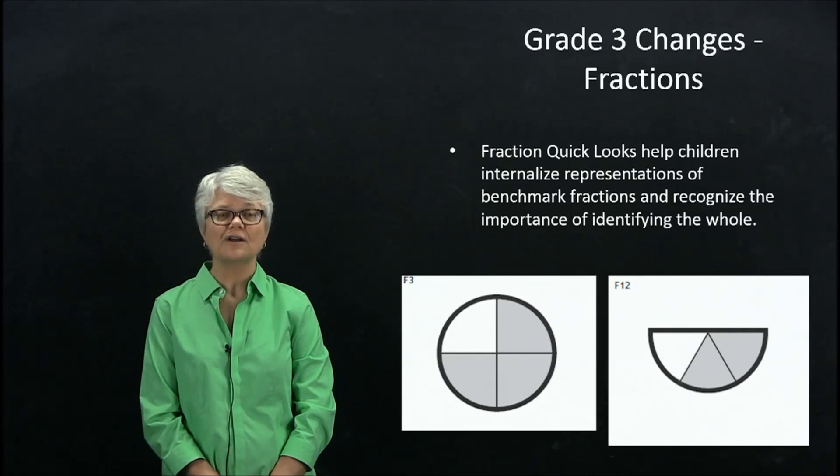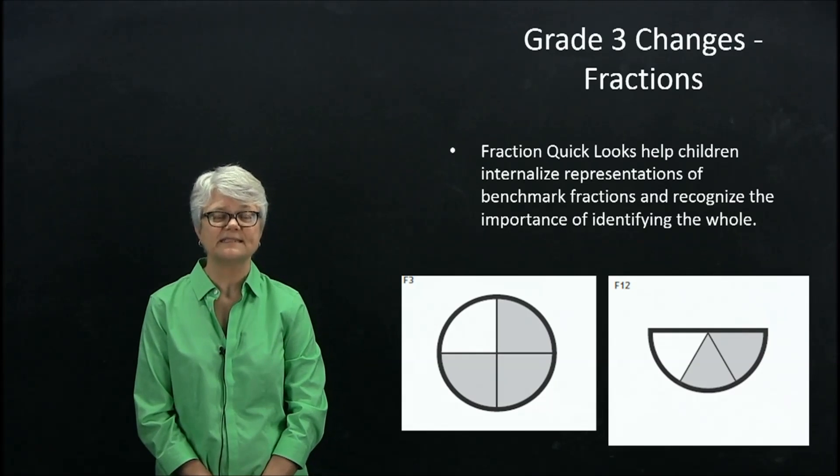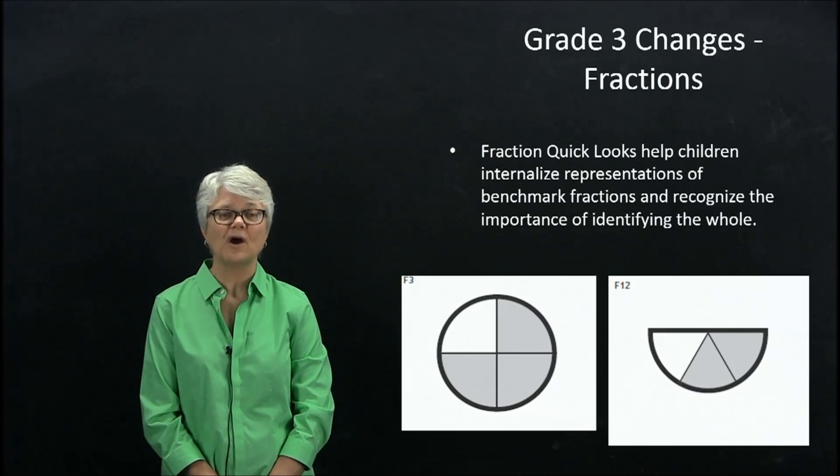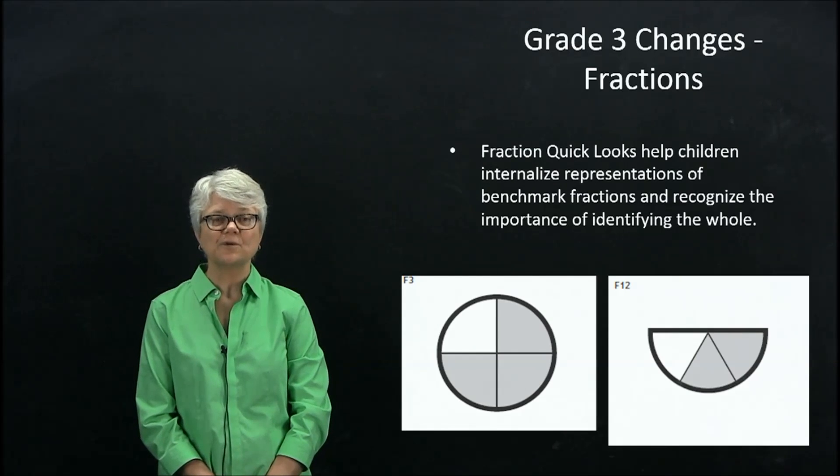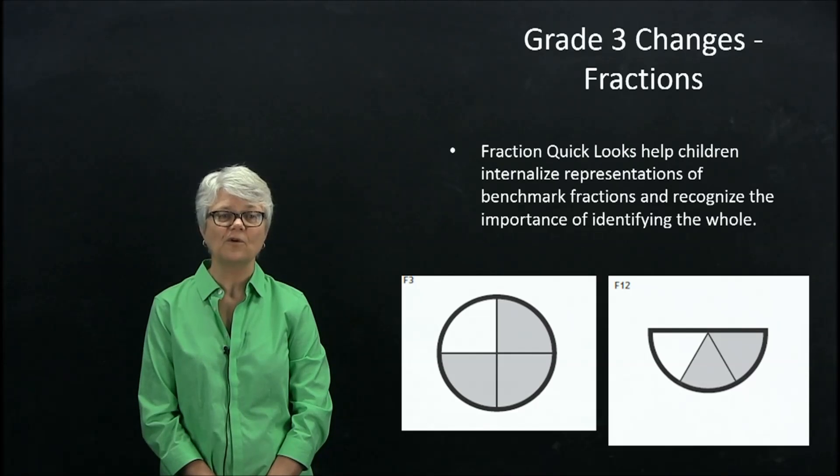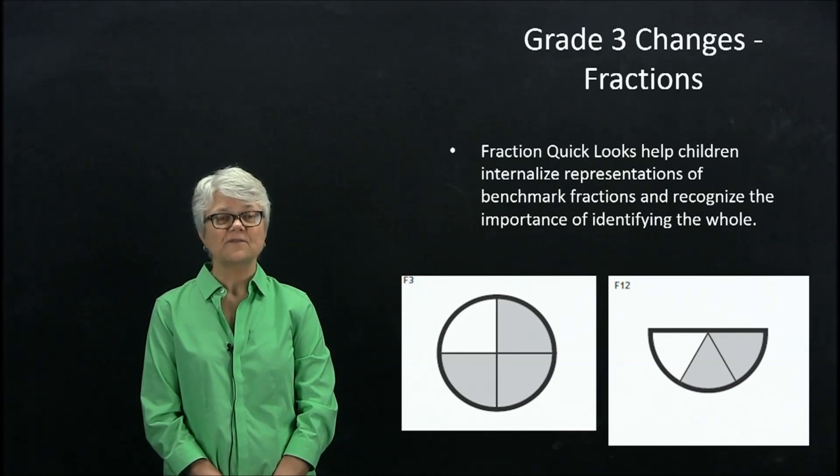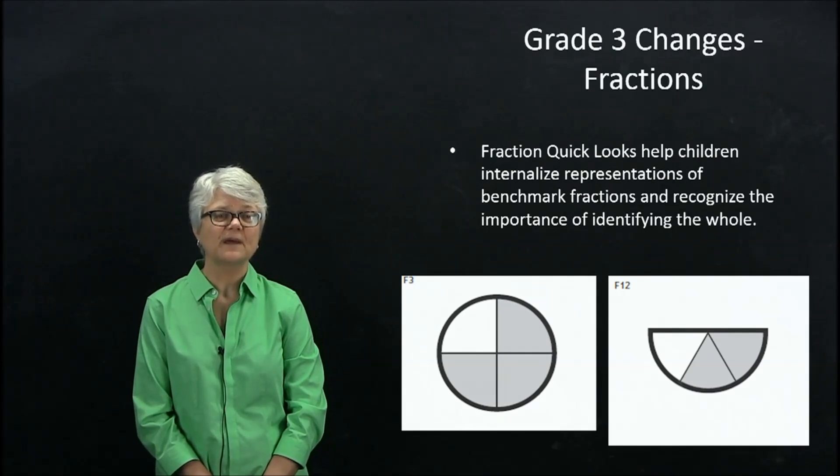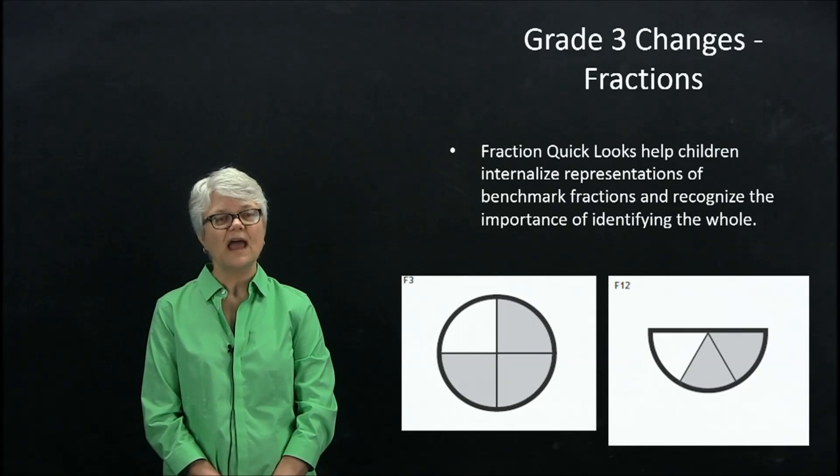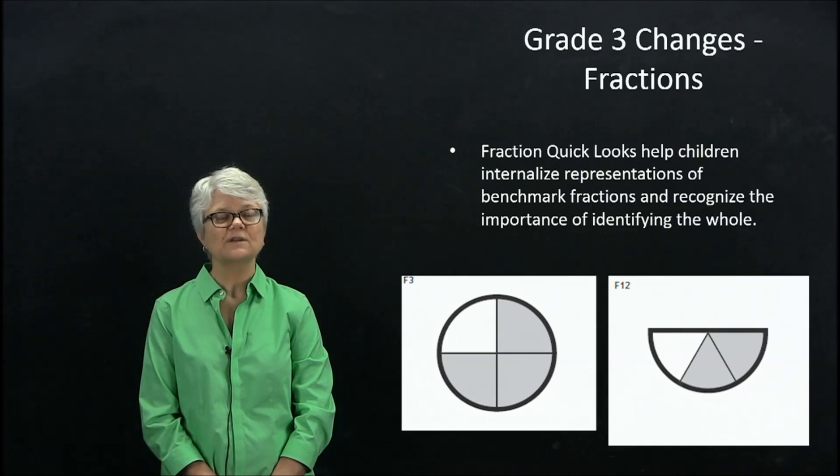So for example, the fraction circle card on the left, a child might say, I see three out of four parts shaded. So that's three out of four, or three-fourths. Likewise, the fraction card to the right, a child might say, I see two out of three parts shaded. So it's two-thirds.